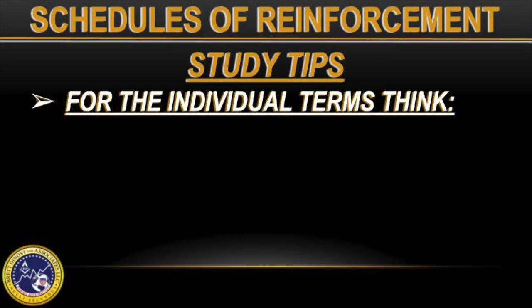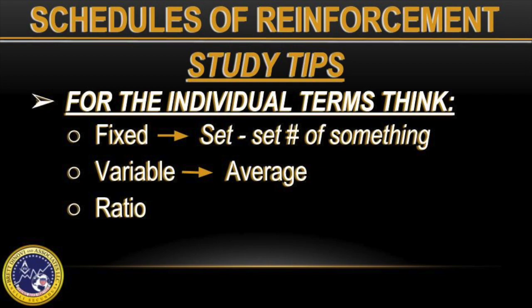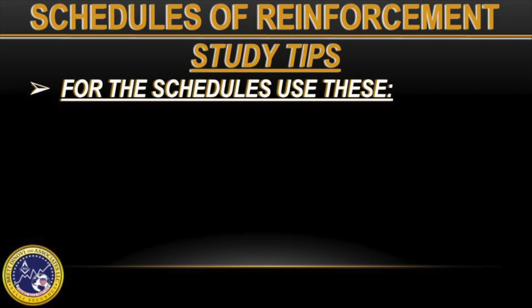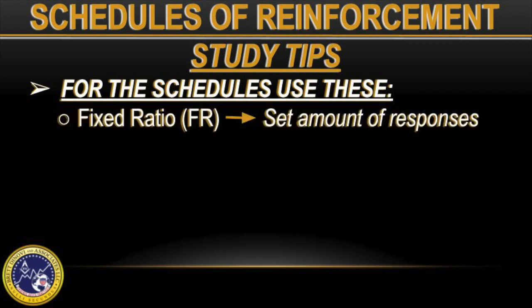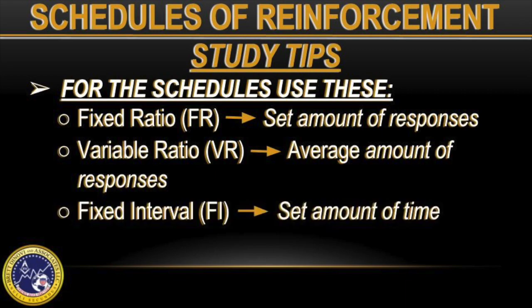To wrap up, here are some strategies for memorizing what each of these terms means, for anyone sitting for their boards or looking to take the RPT exam. For the individual terms: fixed equals a set number, variable equals the average, ratio is the responses needed, and interval is time. For the schedules: fixed ratio is a set amount of responses; variable ratio is an average amount of responses; fixed interval is a set amount of time; and variable interval is an average amount of time.